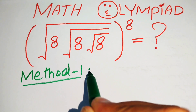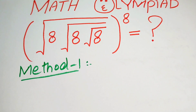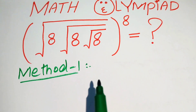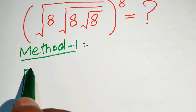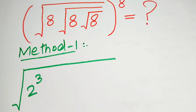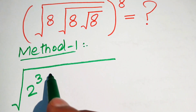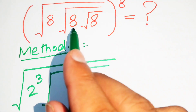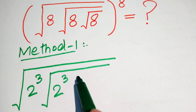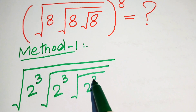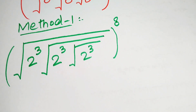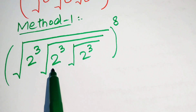In the first method, the very first thing we are going to do is make the prime factors of 8. We know that the prime factors of 8 are written as 2 to the power of 3, because 2 to the power of 3 equals 8. Similarly, inside the square root we also have 8, so we write this 8 as 2 to the power of 3, and we write its whole power as 8. Now in the next step we focus on this term.